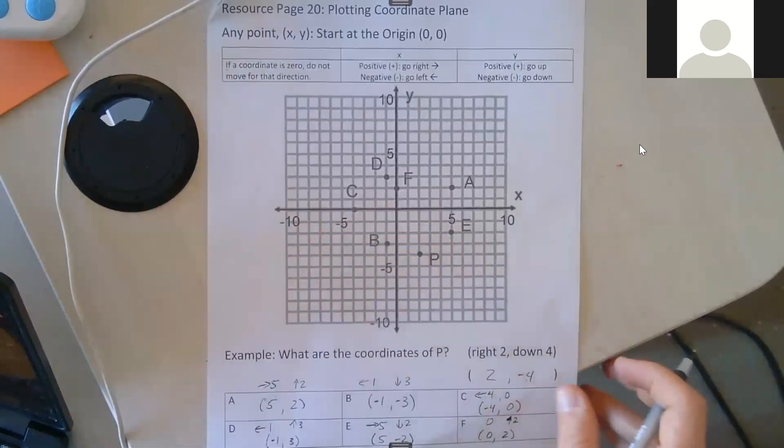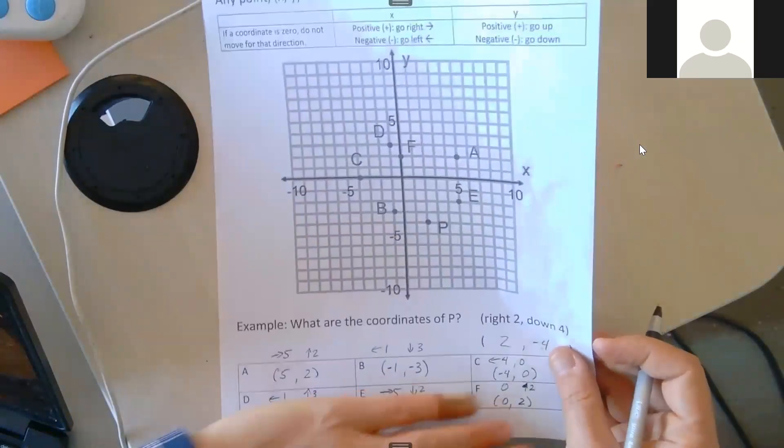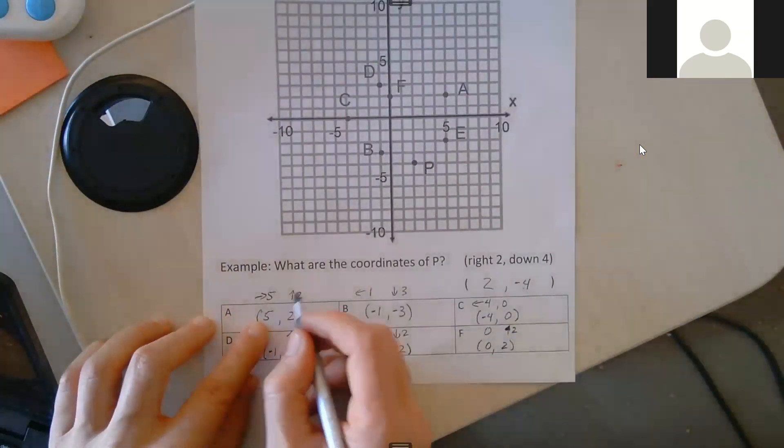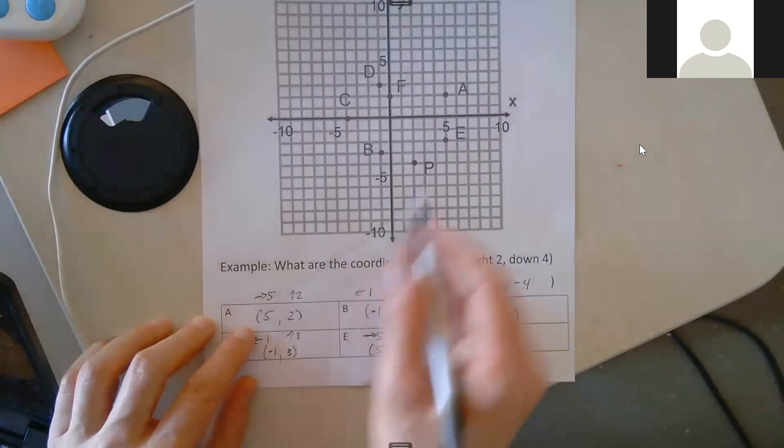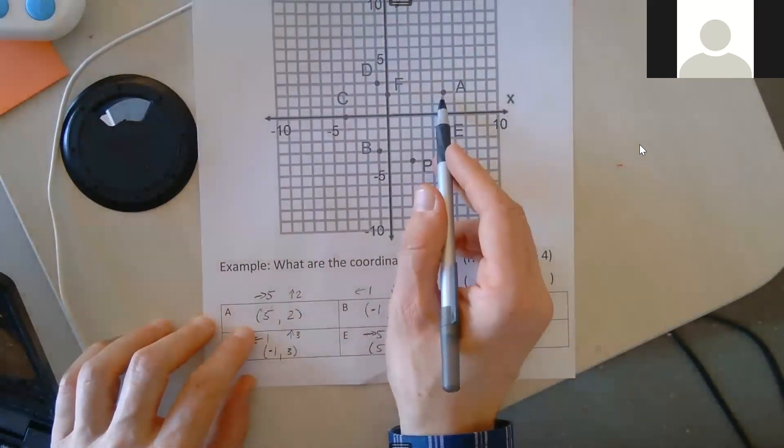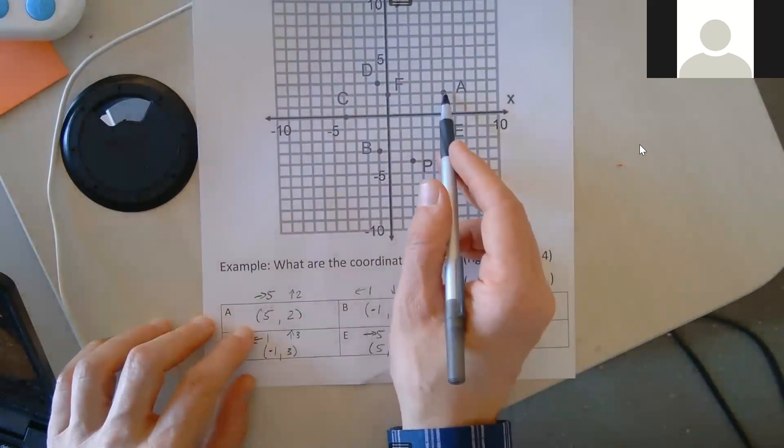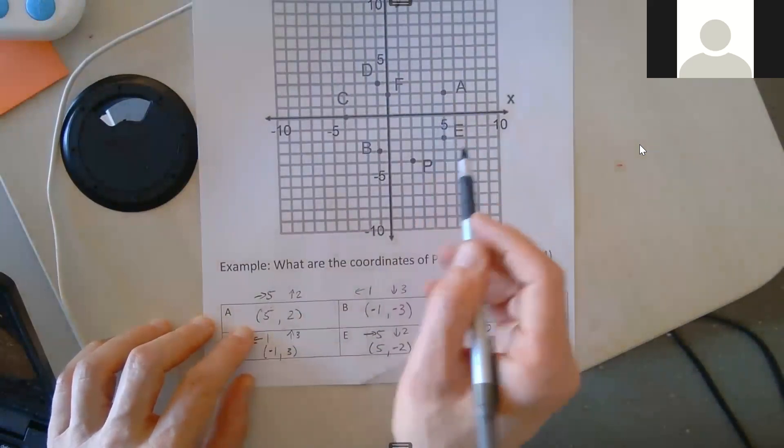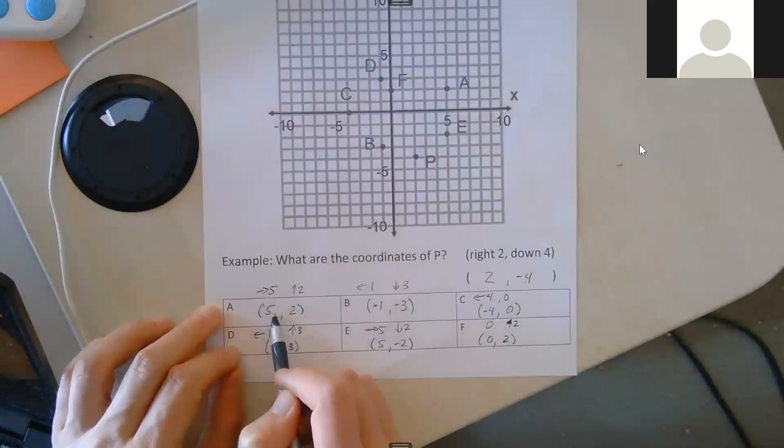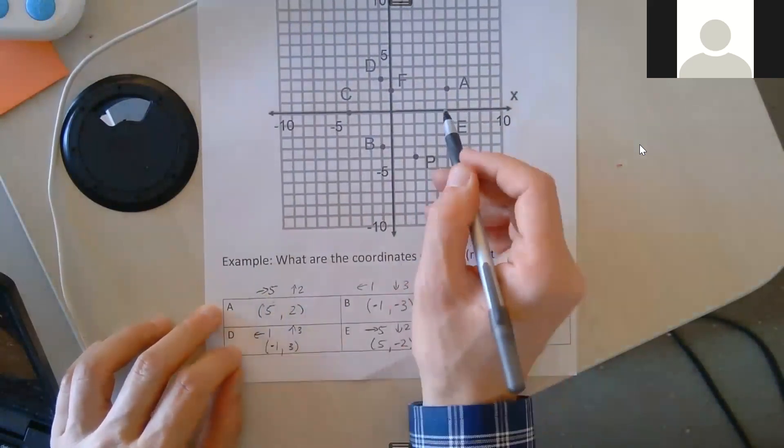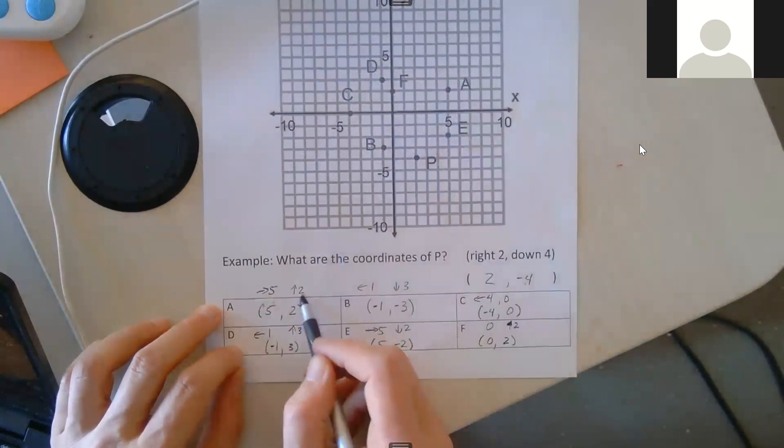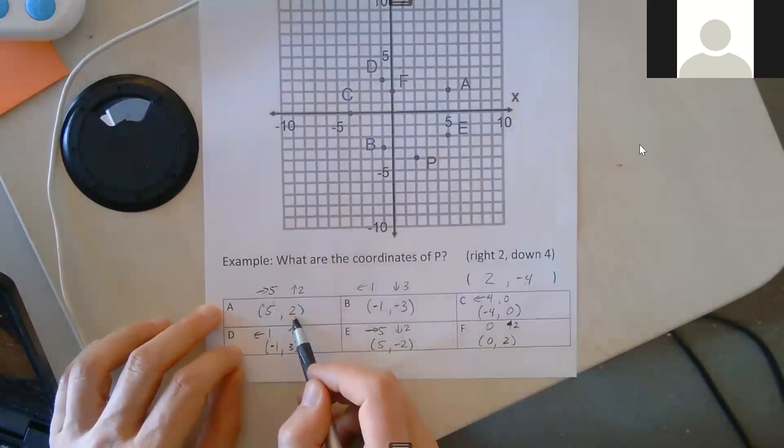So now let's do a couple more examples. Please imagine that these are not written already for you. So if I look at A, A is right here. A is five units to the right, so I annotate five to the right, that's positive five. Then how far up from the origin to get to A? That's up one, two—up two. So positive two.